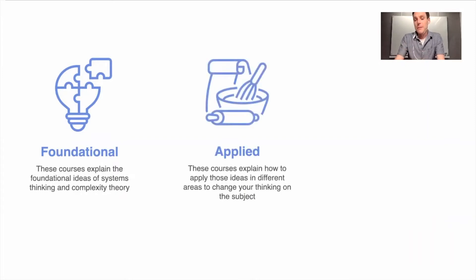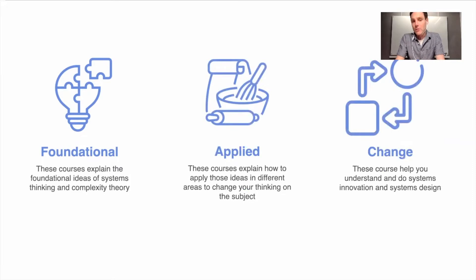We've structured the courses in this learning journey around three different dimensions. First are the foundational ones, these explain key concepts in systems thinking complexity theory. Secondly we have applied areas, this is about taking those ideas and applying them within particular areas like management or ecology or social science. The third set is around systems change and systems innovation and systems design. So it's a question of how do we go about doing systems change.